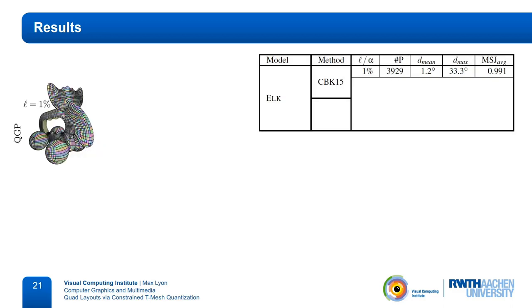We compare our method with the quantized global parameterization algorithm of Campen and colleagues, who, similarly to us, create quad meshes by quantizing a t-mesh. However, the quantization tries to approximate the original length of the arcs and has no concern for the resulting layout.